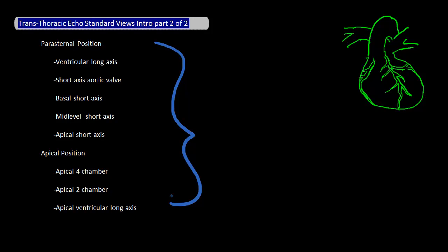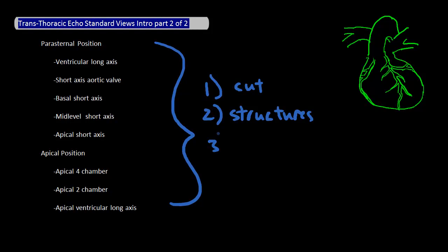What I want to do for each of these views is the following three things. Number one, give you an idea of the angle of the cut. Two, break down the view and show you the major structures and chambers involved. And three, I'll tie this back into breaking down the left ventricle into 16 separate parts.